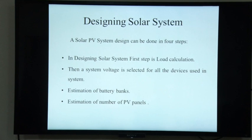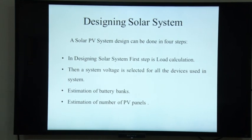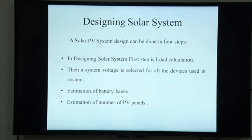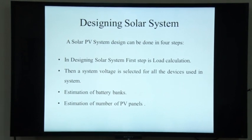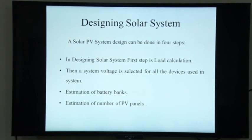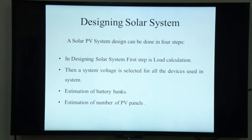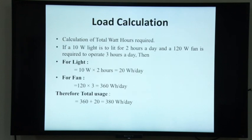A solar PV design can be done in four steps. The first step is load calculation. Then a system voltage is selected for all devices used in the system. The third step is estimation of battery banks — estimating how much quantity and capacity of batteries is required. Similarly, in the estimation of the number of panels, we estimate what the capacity and number of PV panels required should be.